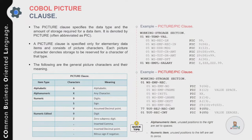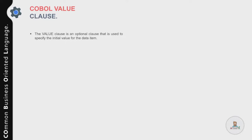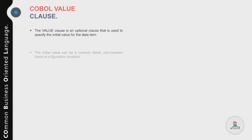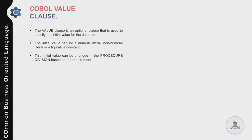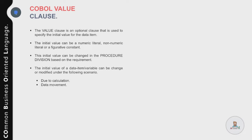Now let's talk about the value clause in COBOL. The value clause is an optional clause used to assign an initial value to a data item or variable. The initial value can be a numeric literal, a non-numeric literal, or a figurative constant. This initial value can be changed in the Procedure Division based on your requirement — whatever initial value you assign to a temporary variable in Working Storage can be changed when you use that variable in your program logic.